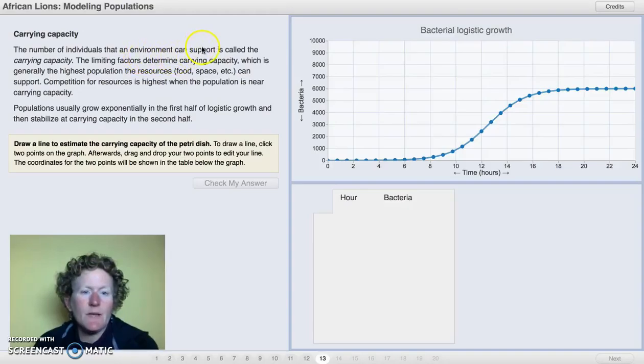The number of individuals an environment can support is called the carrying capacity. That 75 to 100 was definitely the carrying capacity. The limiting factors determine the carrying capacity, which is generally the highest population that the resources, food, space, water, can support. Competition for resources is highest when the population is near capacity. Populations usually grow exponentially in the first half of the logistic growth, and then stabilize as carrying capacity in the second half. Here's where the exponential growth occurs, and then it slows down, and you kind of reach carrying capacity here. This is the petri dish has no more space for any more bacteria to grow on the agar.